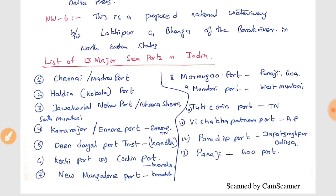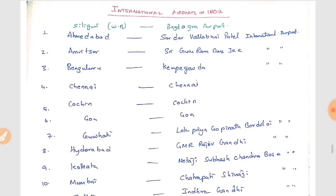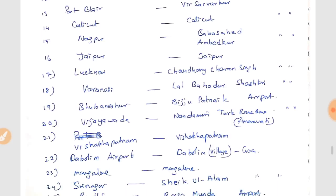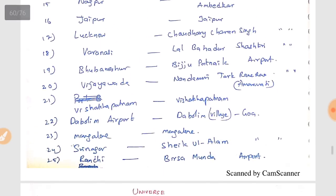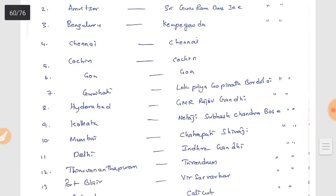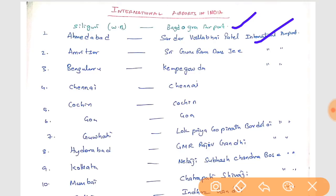After inland waterways and ports, we also have international airports in India. A list of 25 international airports is given and you have to remember those names. For example, Siliguri's airport is called Bagdogra Airport. Ahmedabad's airport is Sardar Vallabhbhai Patel. Amritsar's airport is Sri Guru Ram Dass Jee. Bengaluru's airport is Kempegowda.